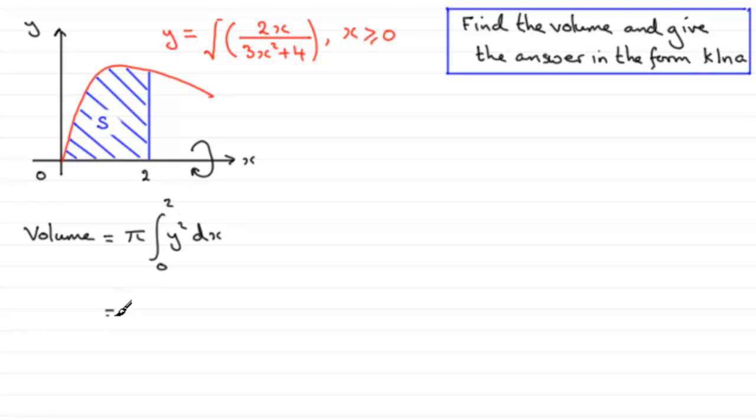Now we know what y squared is, all we've got to do is just remove this square root. So we just get 2x then divided by 3x squared plus 4, and that's all integrated with respect to x.